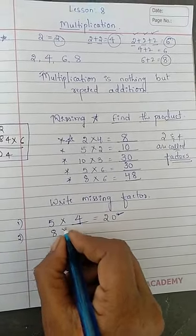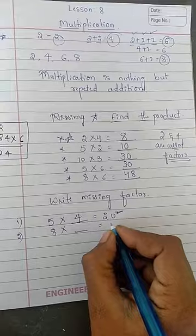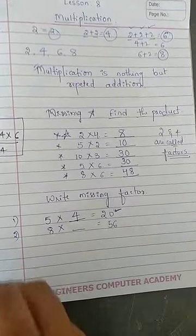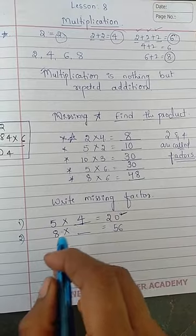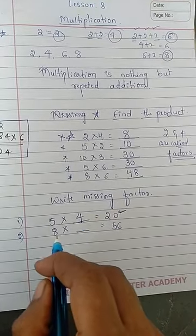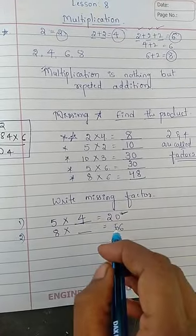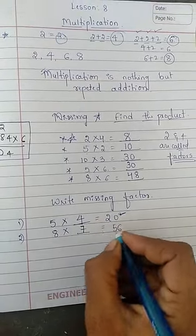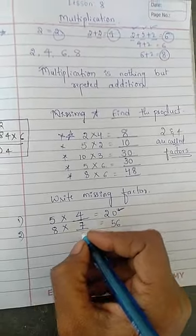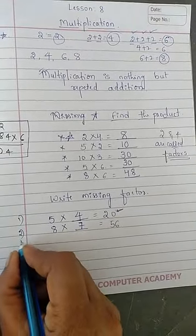Next we will see. 8 into dash is 56. See go on reading the table again. 8 ones is 8, 8 twos is 16, 8 threes is 24. Like that go on reading. When you will get 56? That is 8 sevens is 56.